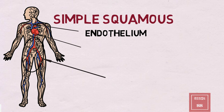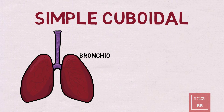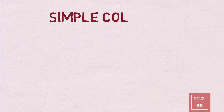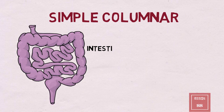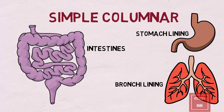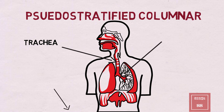Simple squamous — endothelium. Pericardium, peritoneum. Simple cuboidal in the bronchioles and nephrons in your kidneys. Simple columnar in the intestines, stomach, and bronchi. Pseudostratified columnar in your trachea and epididymis.